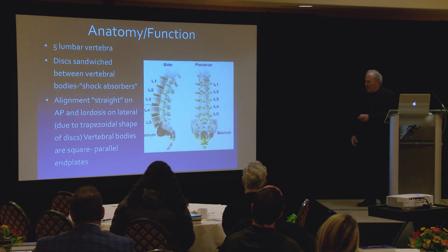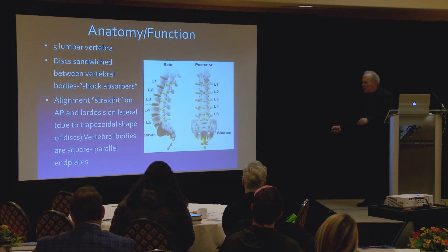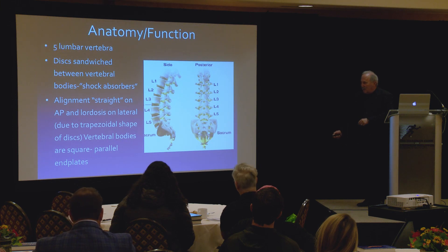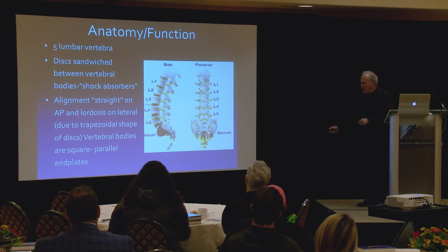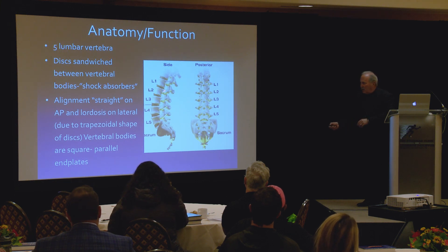So how does it work? There are five lumbar vertebrae in general — sometimes four, sometimes six, but most of the time five. The discs are sandwiched in between the vertebrae. The alignment is straight on an AP — no scoliosis. The definition of scoliosis is a curve of 10 degrees or more; if it's less than 10 degrees, by definition, it's not a scoliosis. The lordosis of the lumbar spine is due not to the shape of the vertebrae, but to the shape of the discs, which are trapezoidal. The vertebrae are square. If you take the discs out and stack the vertebrae, the spine is straight on a lateral — the discs are what cause the lordosis.